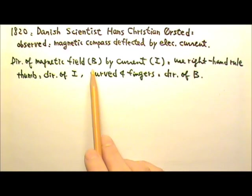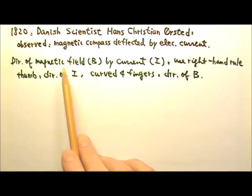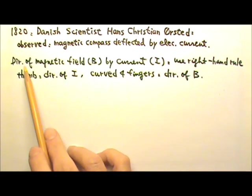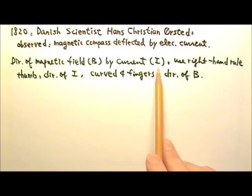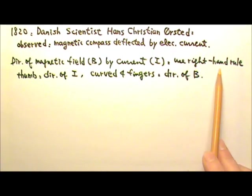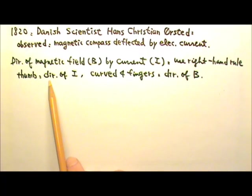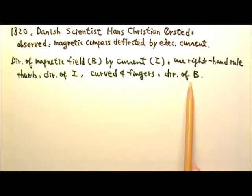We use capital B for magnetic field. To find the direction of magnetic field produced by electric current I, we use the right-hand rule. We use the thumb for the direction of the current and the curved forefingers for the direction of the magnetic field.